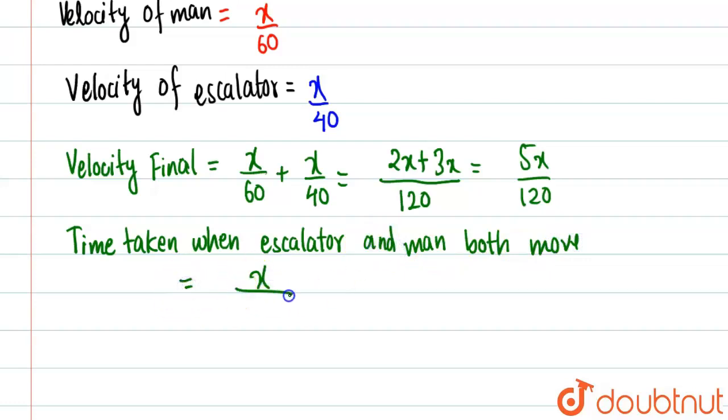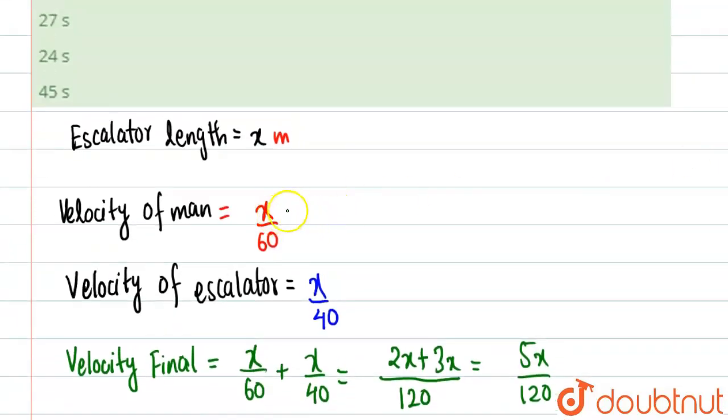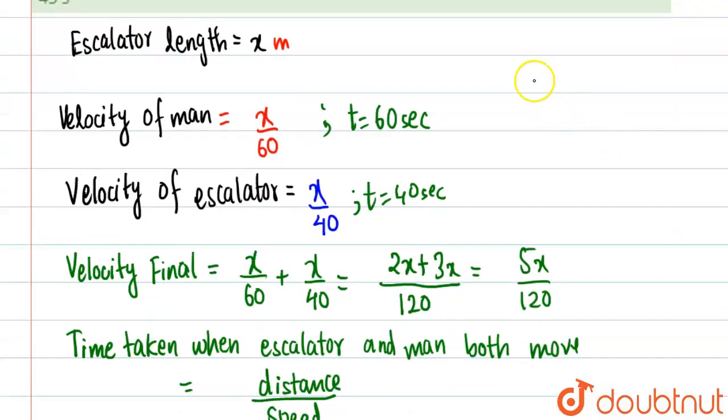Which is 5x by 120. Firstly, let me write the formula: distance by speed. So basically, I have used the distance by speed formula. You can see length of escalator is x, and time taken was 60 seconds. Over here, time taken was 40 seconds. So I have used the same formula, so don't get confused. This was simply speed equals distance by time formula.